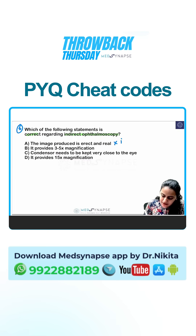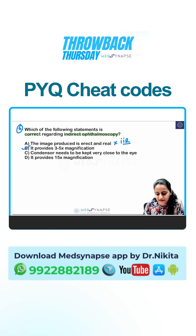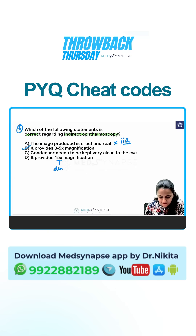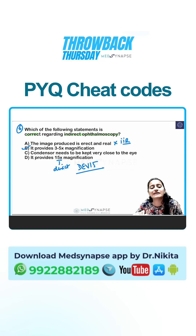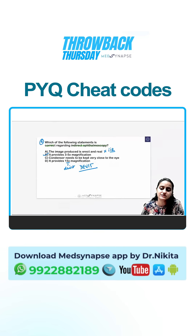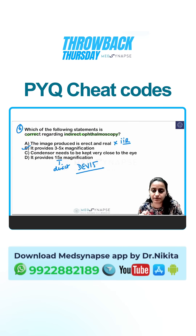The image in indirect ophthalmoscopy is NOT erect and real — it is inverted and real, 5 times magnified. That is correct. 15 times magnified applies to direct ophthalmoscopy. Remember: for direct, it is DAY 15 — erect and virtual, 15 times magnified.